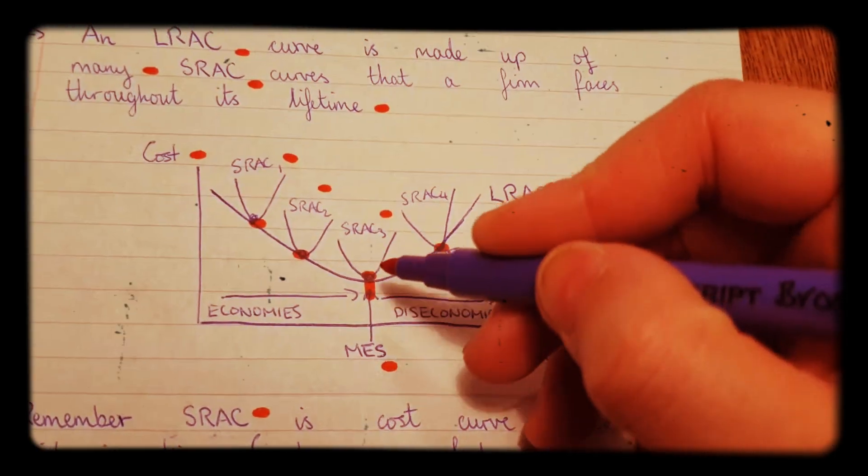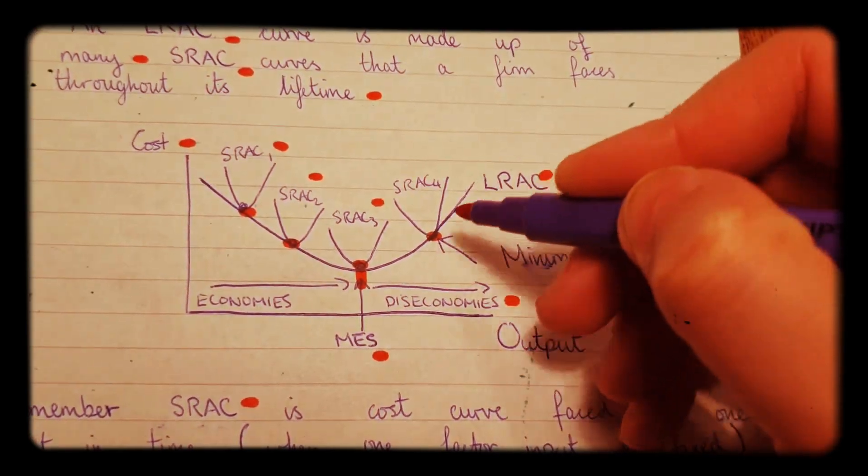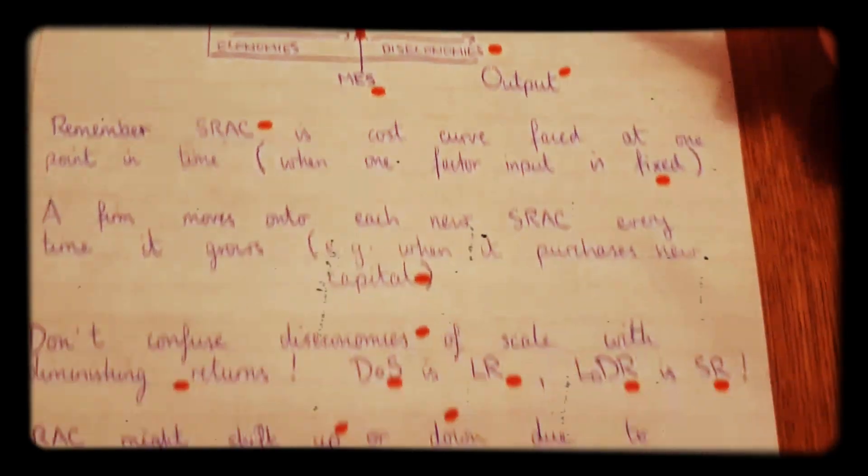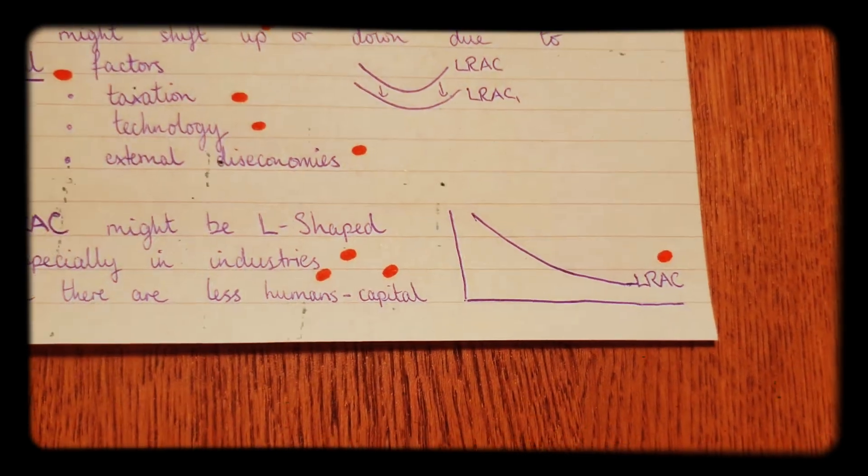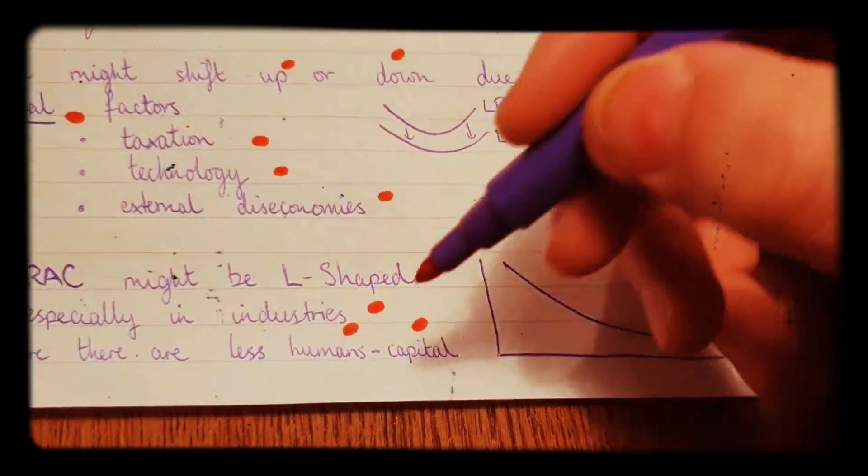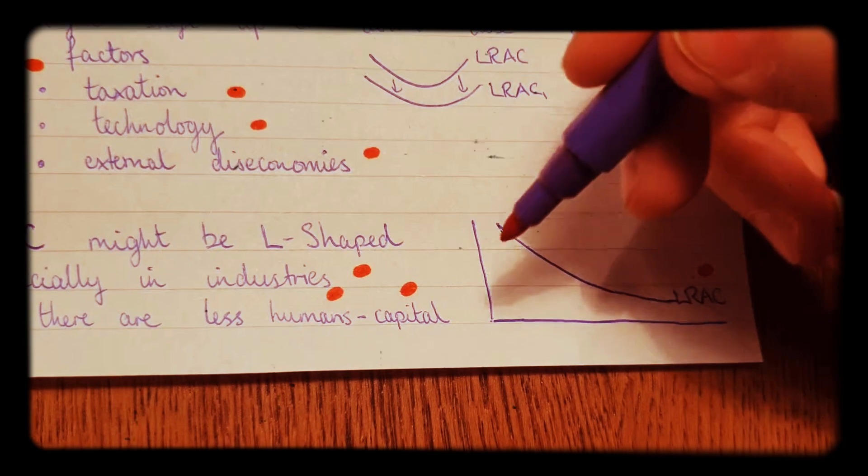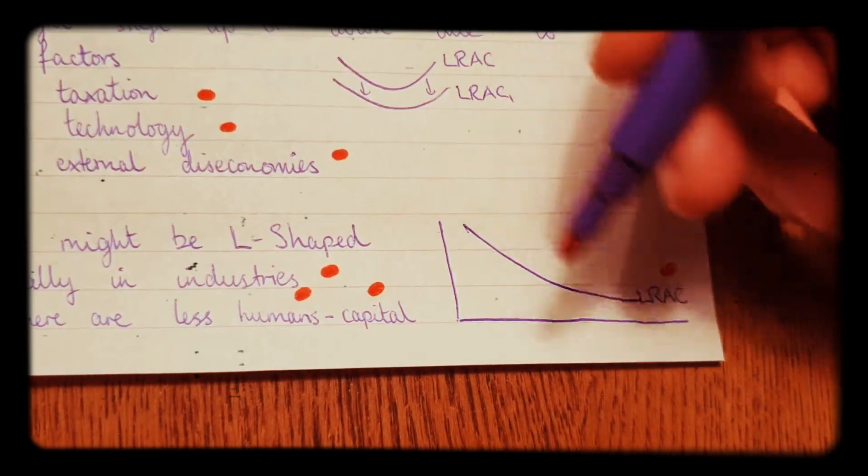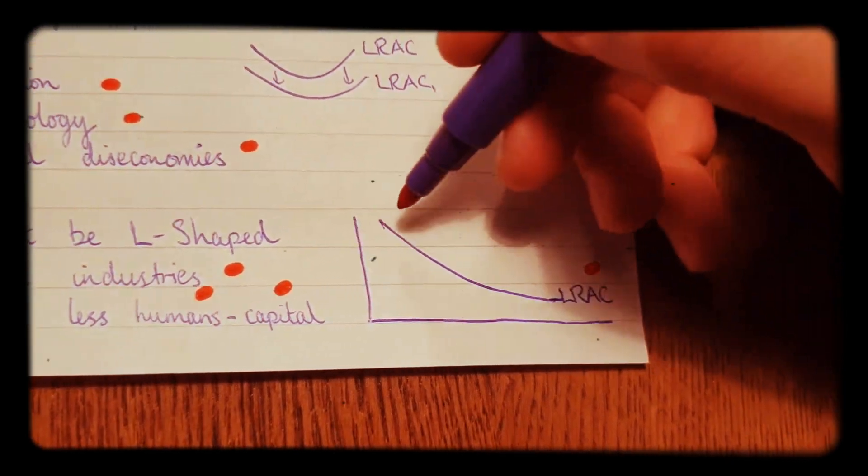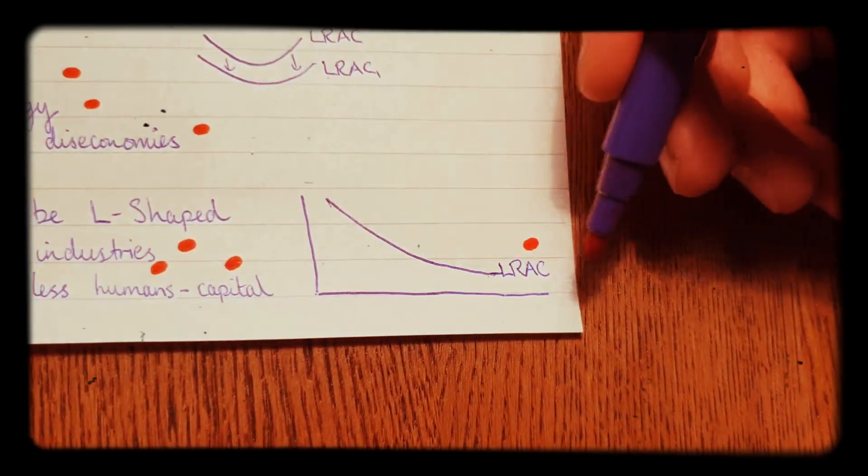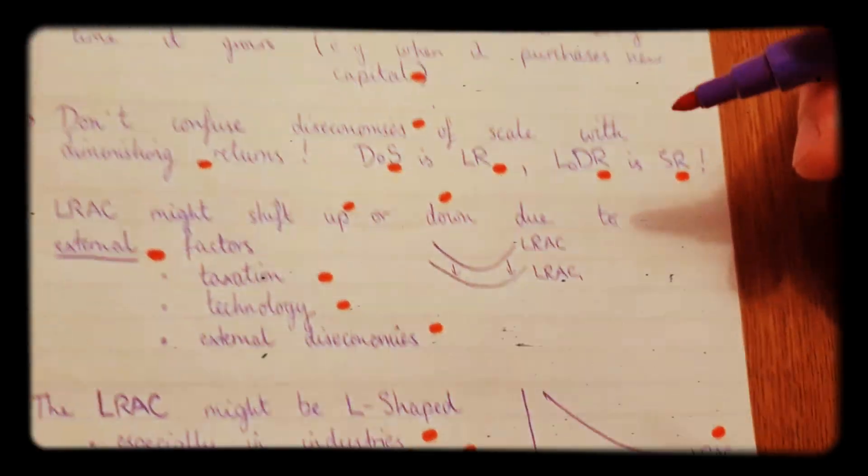So, communication and managerial inefficiencies. These inefficiencies are what causes the LRAC to start going up. When you have a lot more machines and less human beings, you get less of that diseconomies of scale. And you might even face this L-shaped curve here. Hopefully that makes sense.